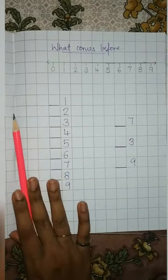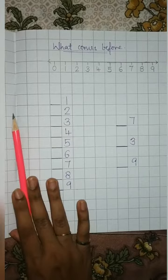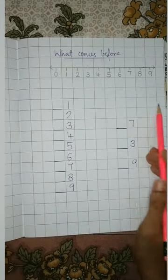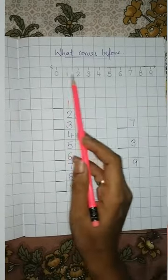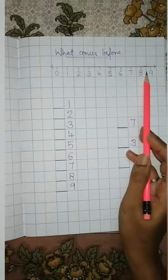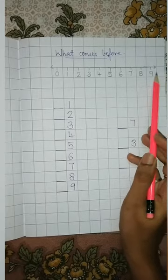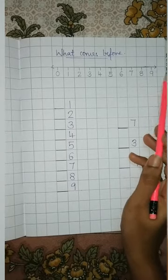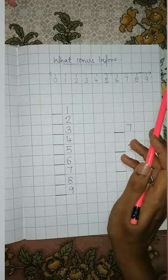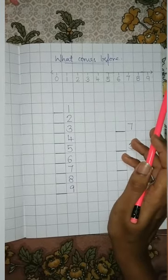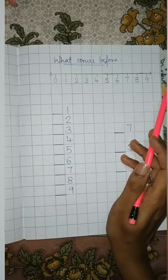Now children, this is a number line. Now we will make use of this number line to see the before numbers.